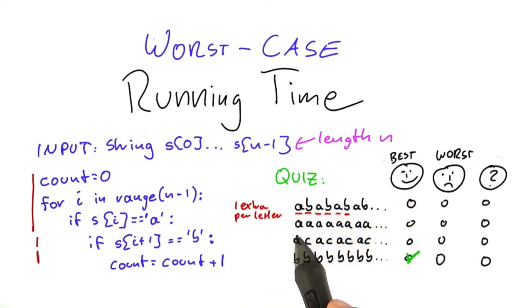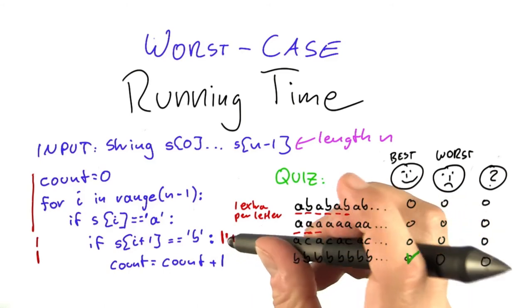Now, for the second string, what happens is this. The algorithm encounters an A, so it will execute this line, but the next letter is not a B, so it will not execute that line down here. Then it goes on to the next letter, and again, it encounters an A, so this line here will be executed, but not this one down here because the next letter, again, is not an A. So as the algorithm progresses, it executes one extra line per letter, just as the string above.